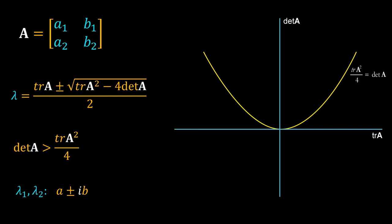What if we are somewhere above the yellow line? Here det(A) is greater than trace(A) squared divided by 4, so the term under the square root is negative. The eigenvalues would be complex numbers of the form a plus or minus i times b. When the eigenvalues are complex numbers, the system has oscillation — the dependent variables oscillate with time.